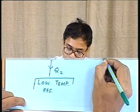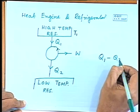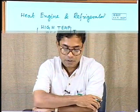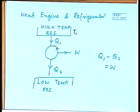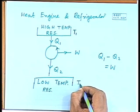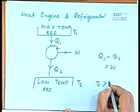This is the schematic representation of a heat engine, and from first law we can write Q1 minus Q2 equals W. There is a flow of heat from the high temperature reservoir at temperature T1 through this heat engine to the low temperature reservoir at temperature T2, where T1 is greater than T2. Basically one can think of different devices which can be termed as heat engines, for example an internal combustion engine or a steam power plant.